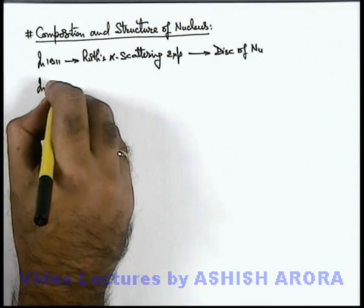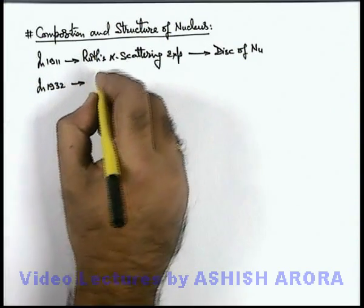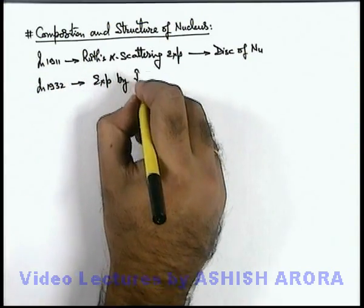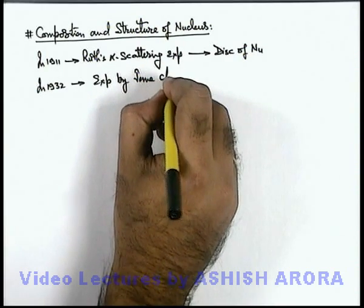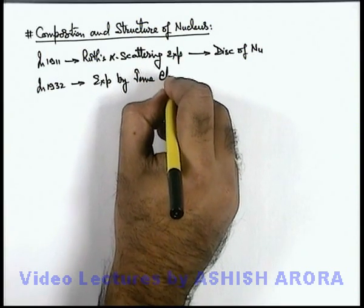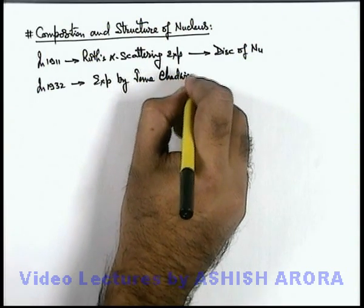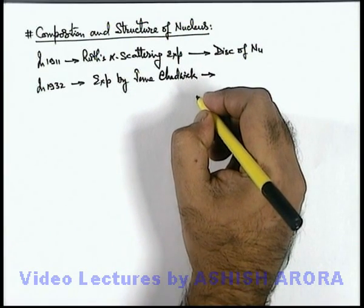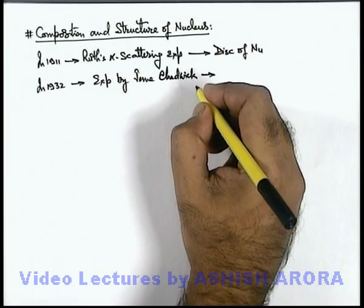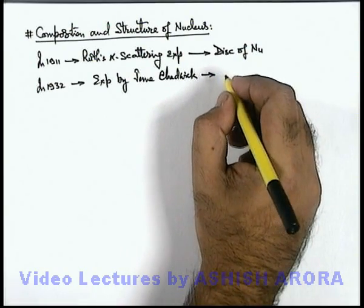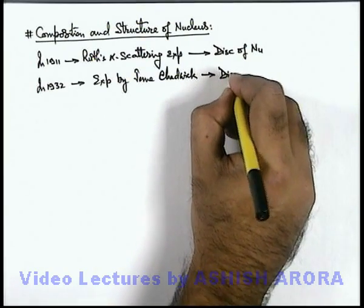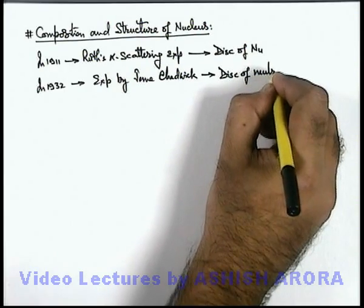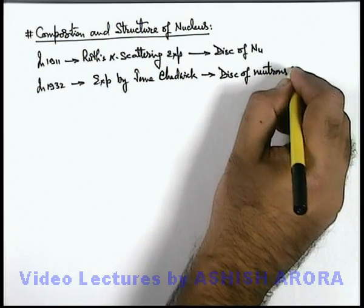Later, in 1932, there were several experiments which were performed by James Chadwick. Neutrons were discovered — it was found that a neutral particle exists inside the nucleus, which are called neutrons. This was the discovery of neutrons in the nucleus.